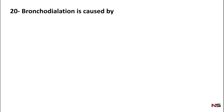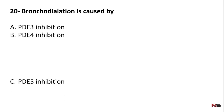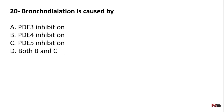Question 20: Bronchodilation is caused by — PDE3 inhibition, PDE4 inhibition, PDE5 inhibition, or both B and C. The correct answer is both B and C — PDE4 and PDE5 inhibition can result in bronchodilation.